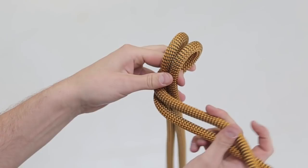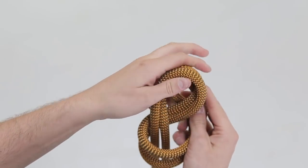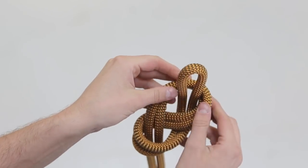Form a bite. Wrap the bite around the tail end to form a loop. Come around through the back of the loop to make a figure eight.